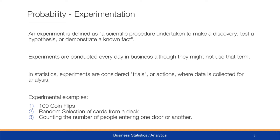Some simple experimental examples include 100 coin flips — we could experiment to see whether or not we have a fair coin, and we should get close to a 50-50 split between heads and tails. Another experimental trial would be a random selection of cards from a deck to see the probability of getting a particular card or suit. Another would be counting the number of people entering one door or another, such as testing whether students use the front or side door of the business school.